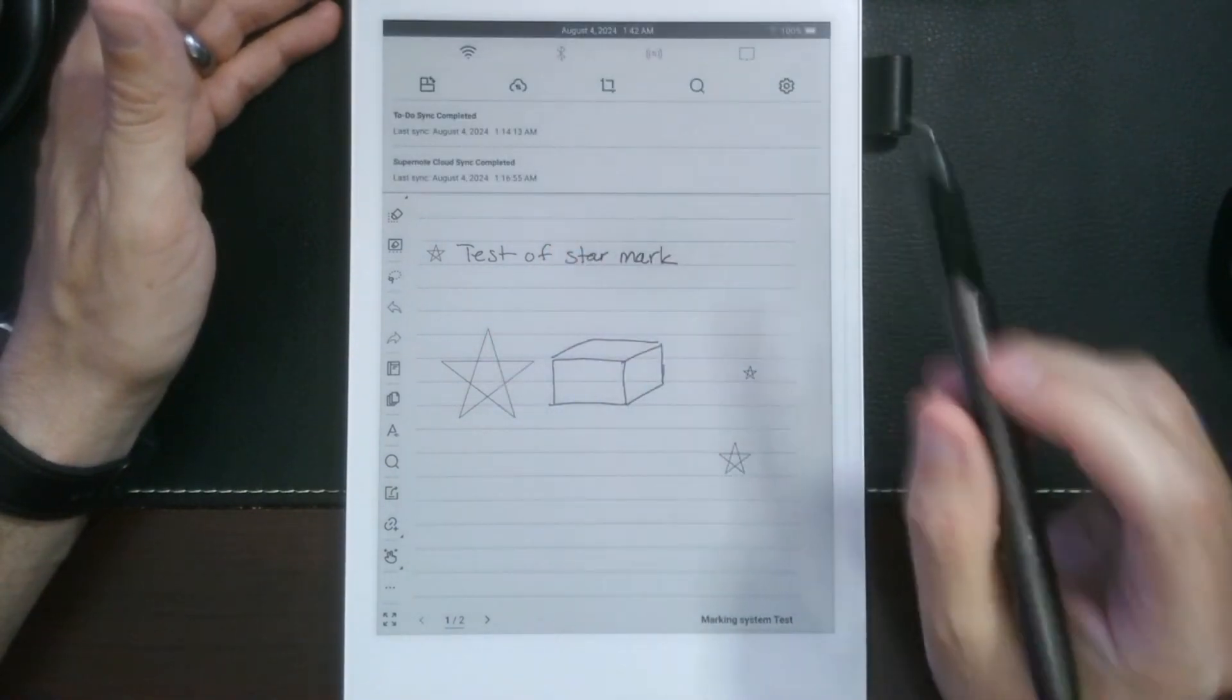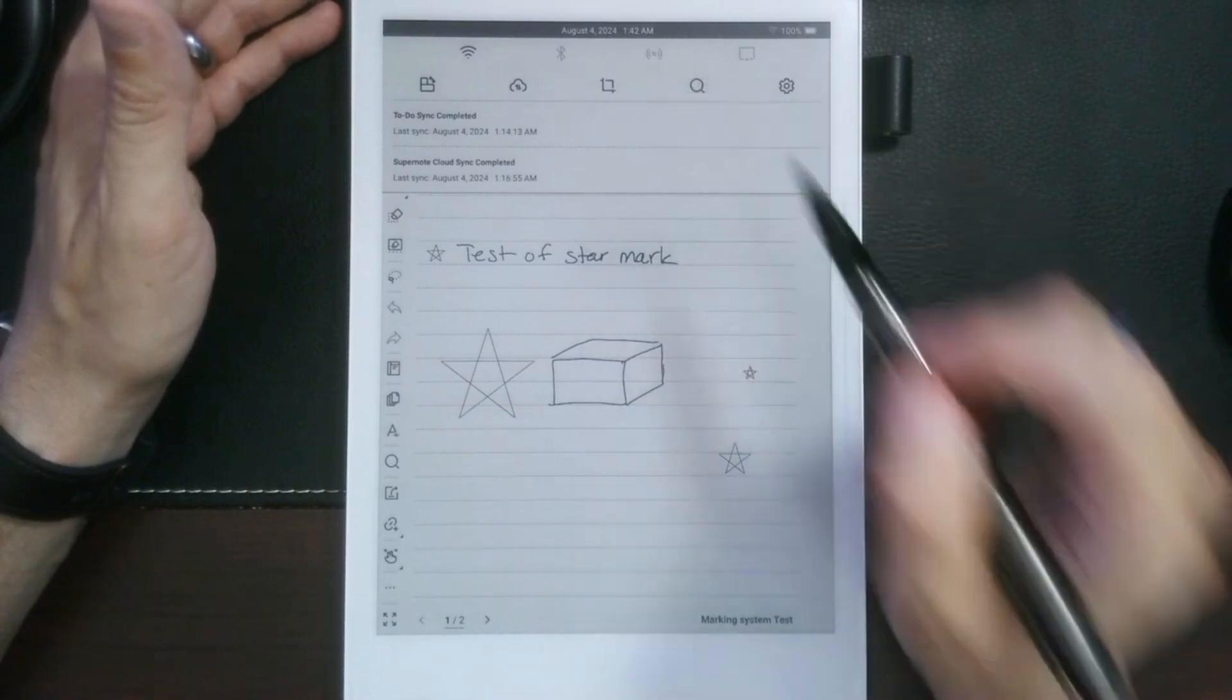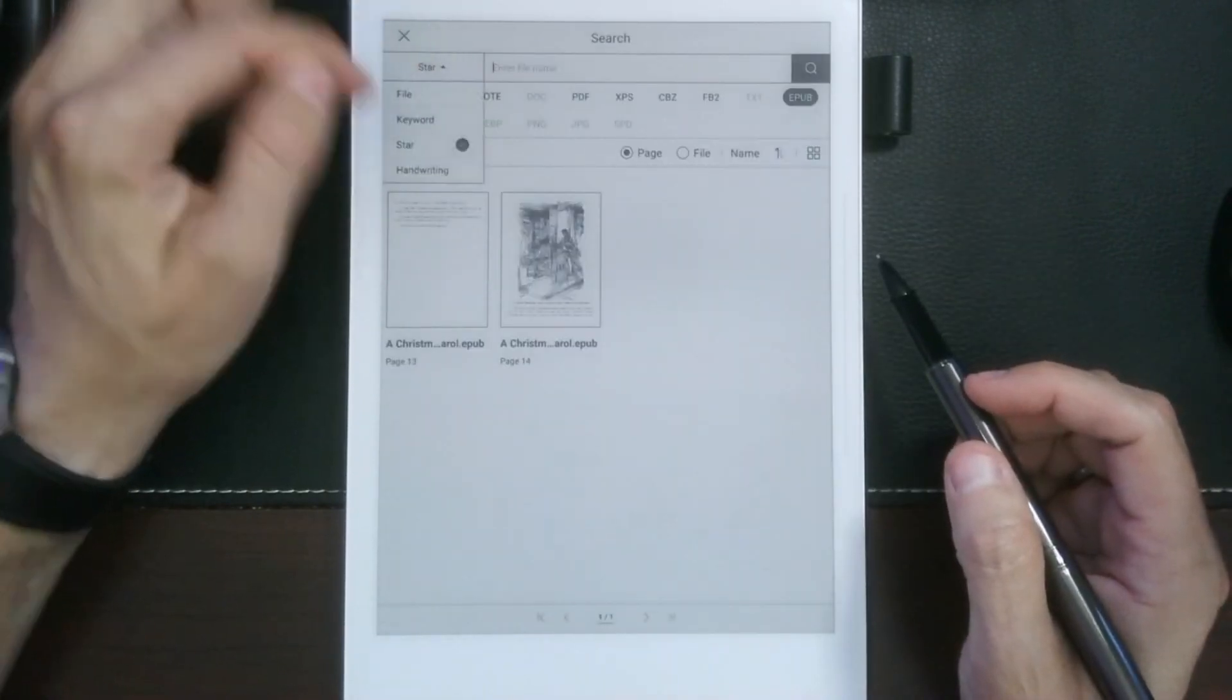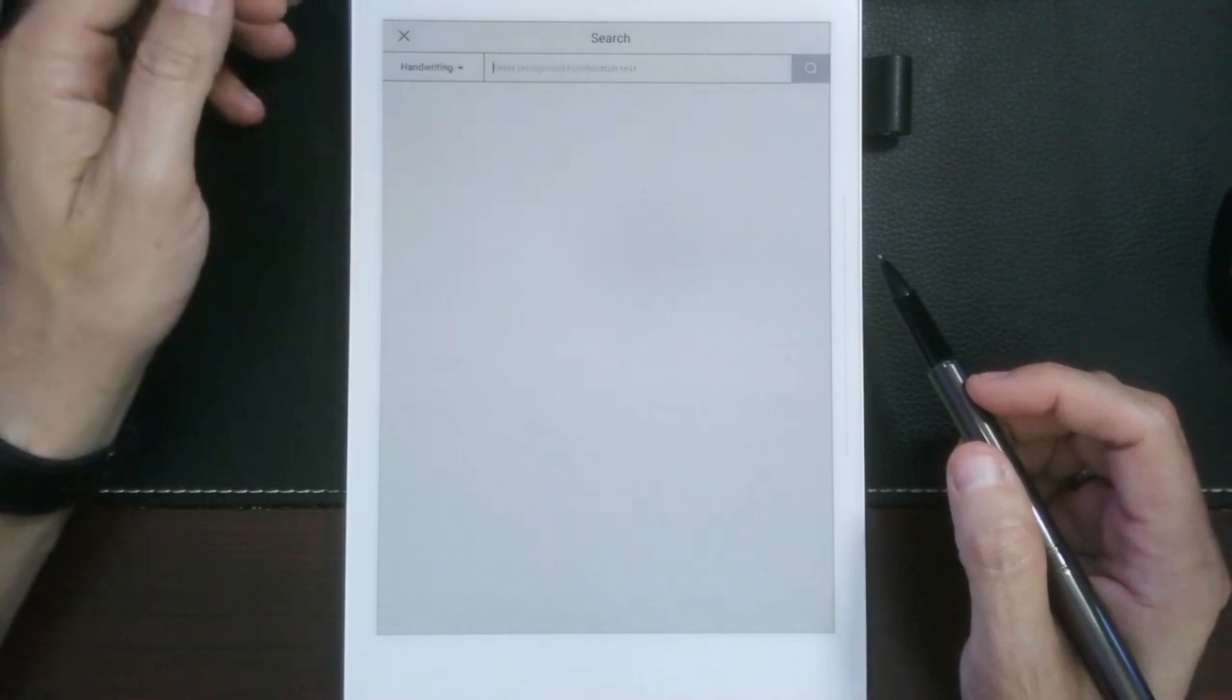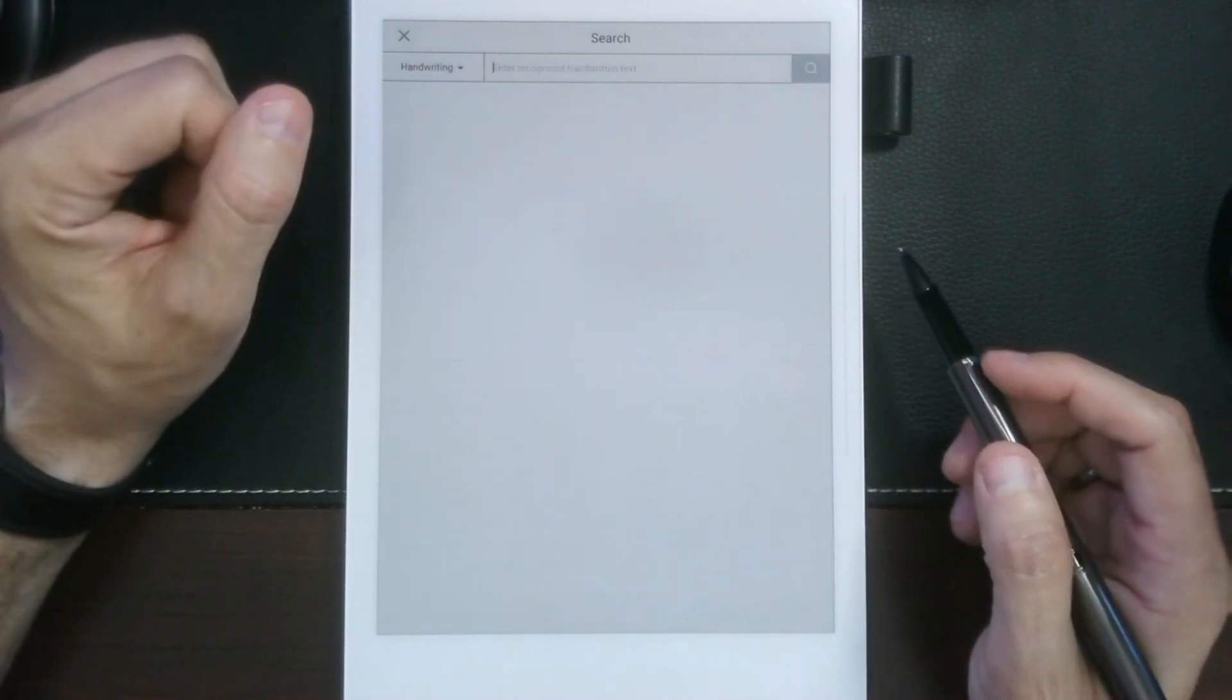real-time recognition, the note becomes searchable. We'll go into that search function again, and then we pick handwriting, and then let's just pick